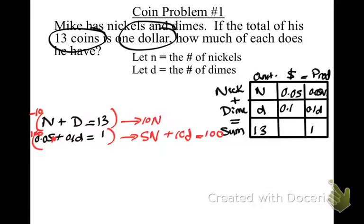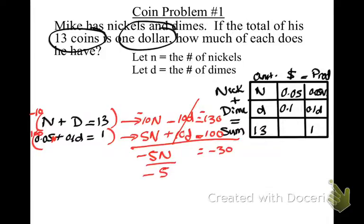And the top one, I need an additive inverse. I'm going to multiply by negative 10. Negative 10 N minus 10 D equals negative 130. I'm getting rid of these two. I get negative 5 N equals negative 30, divide by negative 5, and N equals 6. So if this is 6 nickels, then how much is this? Then that would be 7.